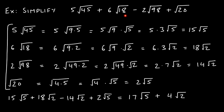Next, 6 radical 18: the largest perfect square factor of 18 is 9 (since 16 is not a factor). So 18 equals 9 times 2. Splitting the radical: square root of 9 is 3, and 6 times 3 is 18. So 6 radical 18 simplifies to 18 radical 2.